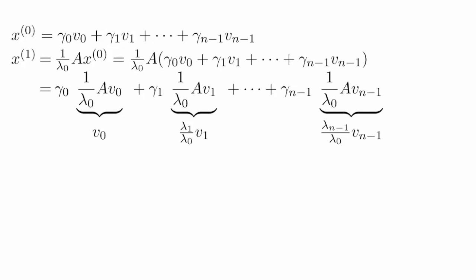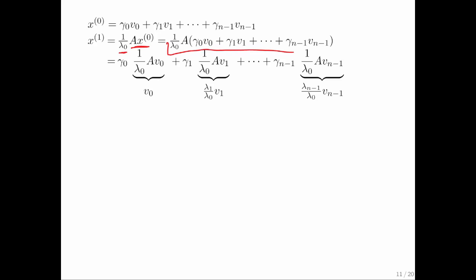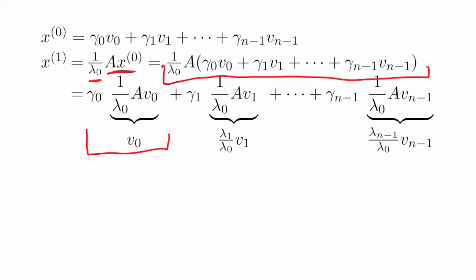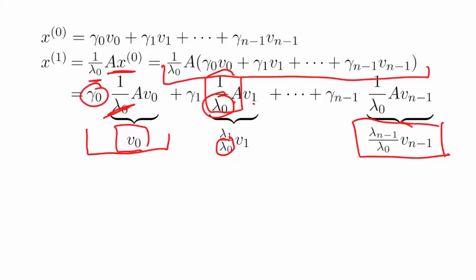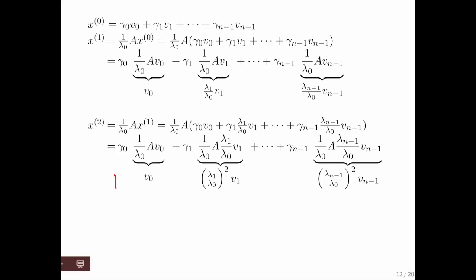What if instead of only multiplying by A, we also divide by lambda 0? If you work it out, the first term — A times v0 gives lambda 0 times v0, but that lambda 0 gets wiped out by the division — leaves just v0 multiplied by its coefficient. For the second term, A times v1 is lambda 1 times v1, but now divided by lambda 0, giving that ratio. So the first term is simply gamma 0 times v0 — it doesn't change. If you hit it again, the first term still doesn't change.